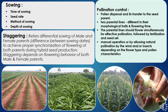In seed production, staggering is a practice followed because different types of parents with different genetic identities are used. Staggering refers to the differential sowing of male and female parents — the difference in sowing dates — to achieve proper synchronization of flowering of both parents during hybrid seed production. Staggering depends on the flowering behavior of both male and female parents.